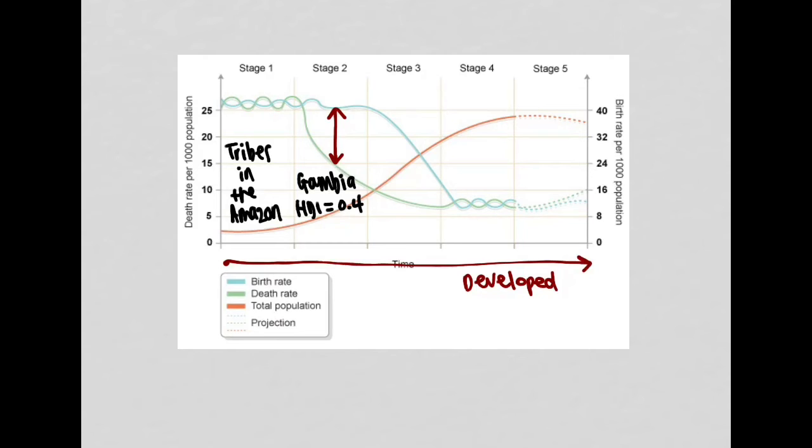In terms of case studies, we're looking at countries that could probably be classified as NEEs, kind of industrialising developing countries, such as, for example, India. So India would be a good case study to use for stage 3, and they have a HDI index of around about 0.6.